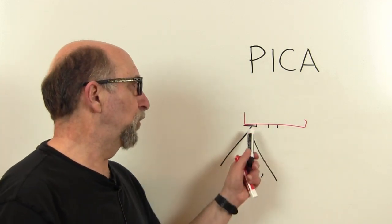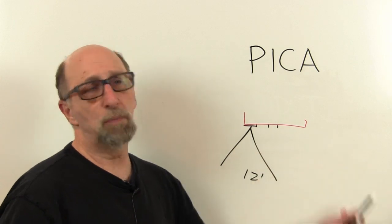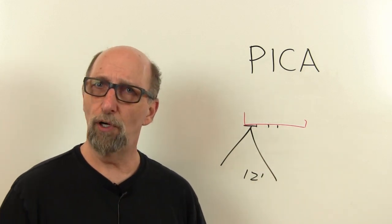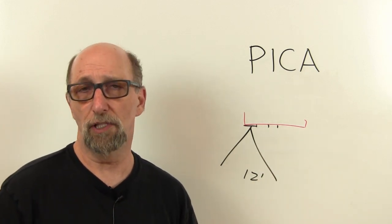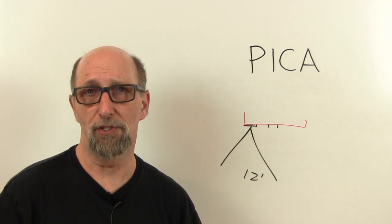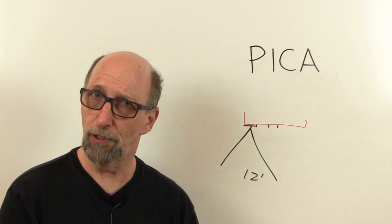So obviously if there are 12 points in each Pica and six Picas in each inch, a point is about a 72nd of an inch. Or these days it's exactly a 72nd of an inch. It used to be a little bit smaller.